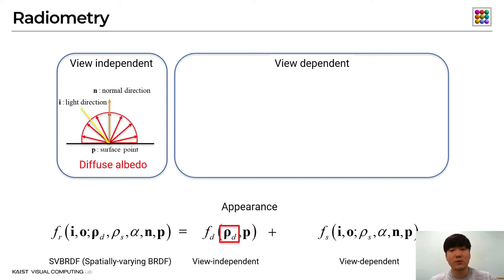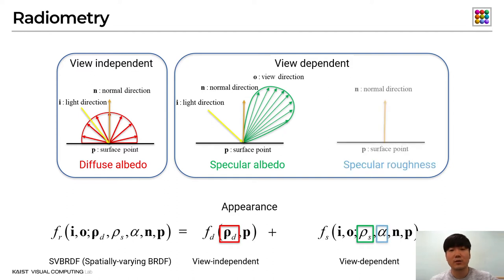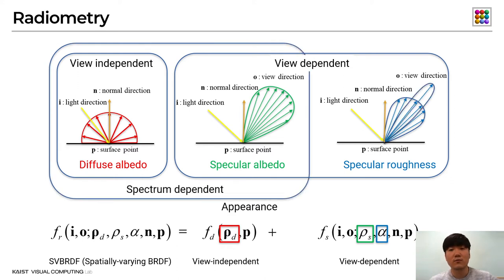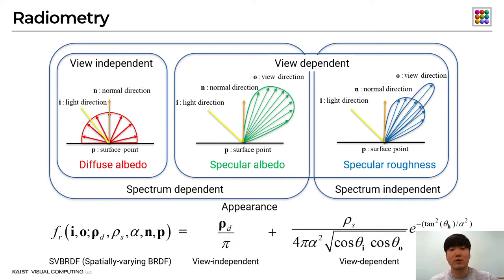Diffuse reflectance is represented by the diffuse albedos, which determines the amount of energy evenly reflected in all directions. Specular reflectance is described by two different parameters: first, the specular albedo determines the amount of reflected light along the mirror direction with respect to the normal direction; second, the specular roughness controls the spread of the specular lobe. Although the diffuse and specular albedo are spectrum-dependent components, the specular roughness parameter generally does not change across the spectrum. We use the Ward model to formulate our SVBRDF.